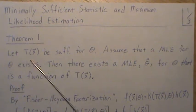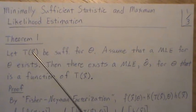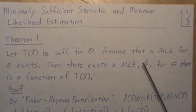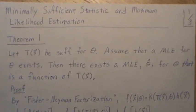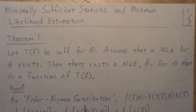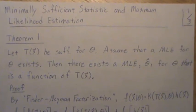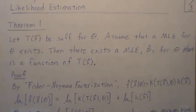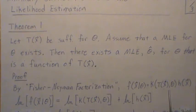Theorem 1 says: let T be a statistic sufficient for theta. Assume that a maximum likelihood estimator for theta exists. Then there exists an MLE theta-hat for theta that is a function of our statistic T. Notice that it's a function of the data, and that's what makes it a statistic. The proof uses the Neyman-Fisher factorization: since T is sufficient, we can factor the likelihood accordingly.